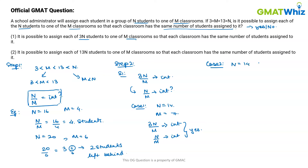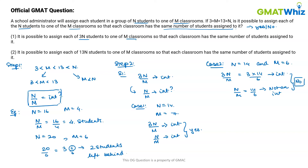Case 2: suppose n equals 14 and m equals 6. Then 3n over m equals 3 times 14 over 6, which is divisible and is an integer. But n over m is 14 over 6, which is not an integer. So I can answer with a definite no. Since I get two contradictory answers, Statement 1 is not sufficient. I will eliminate answer choices A and B.